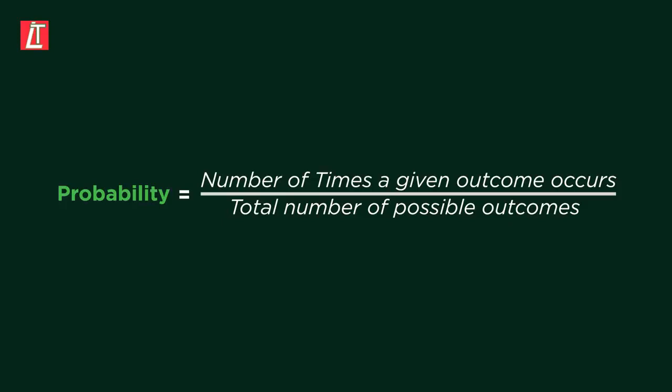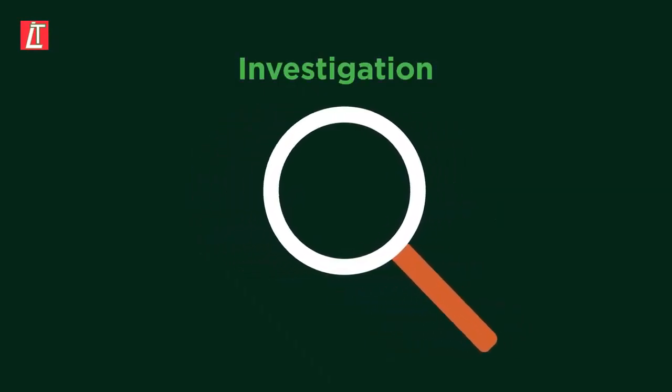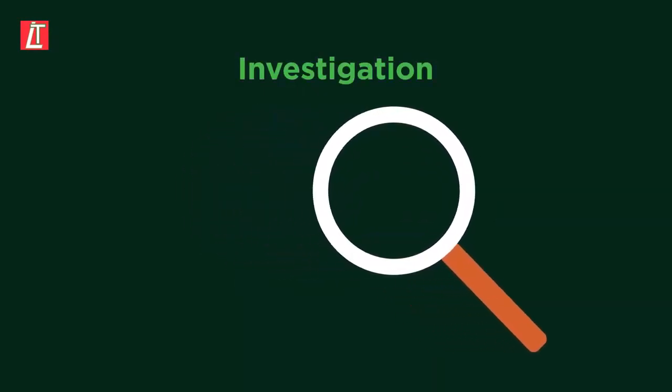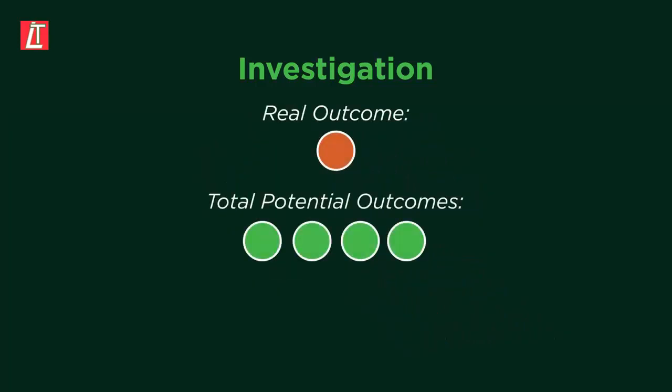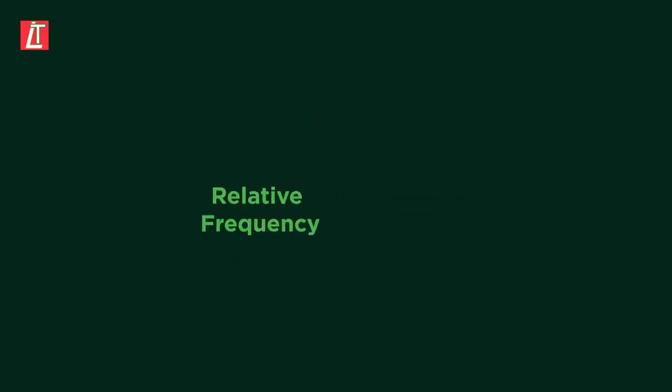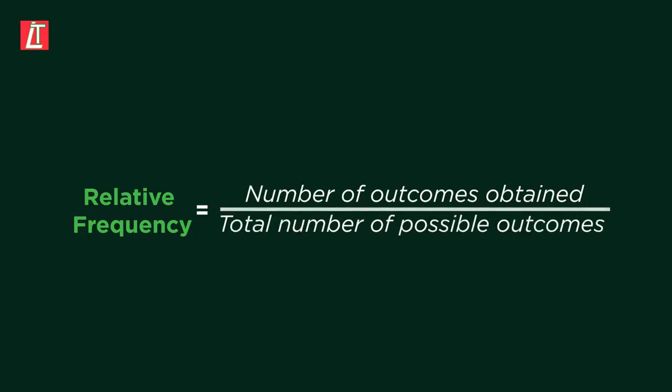Sometimes it will be difficult to find the probability of an event happening. You can then do an investigation to calculate probability. When investigating, you compare the real outcome of a given event with the total number of possible outcomes. This can be done by calculating the relative frequency of a given outcome. The relative frequency of an outcome is the ratio between the number of outcomes obtained and the total number of possible outcomes.